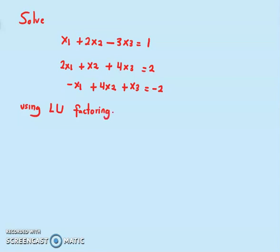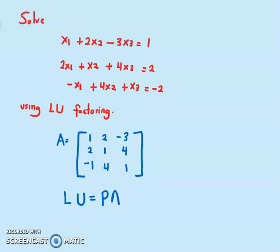When I say LU factoring here, it means with maximum column pivoting. Now first we want to write the matrix A. So what is our matrix A? This is our matrix A: 1, 2, minus 3; 2, 1, 4; minus 1, 4, 1. Now we want to find LU equals to PA.